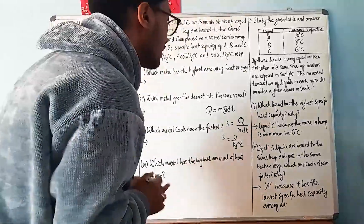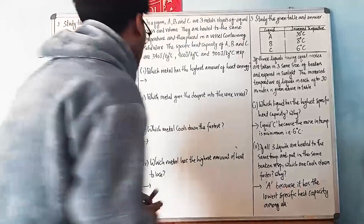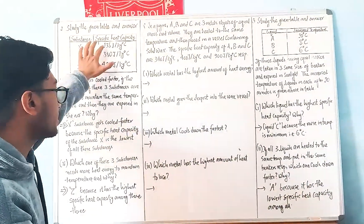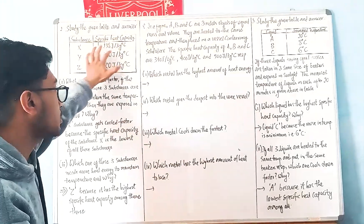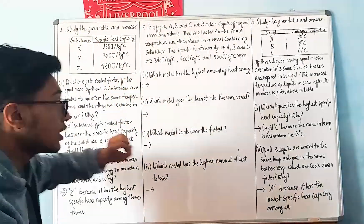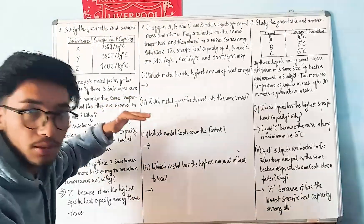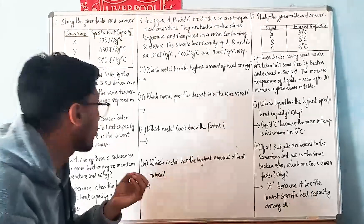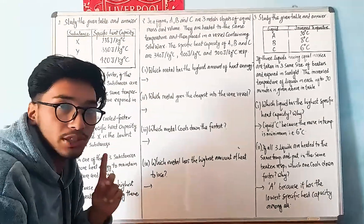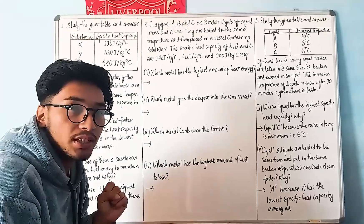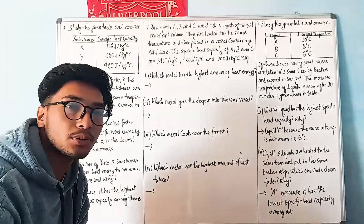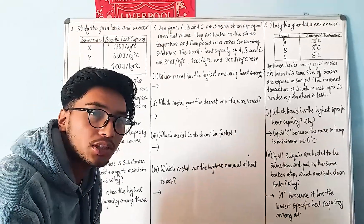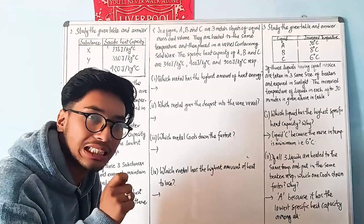Here we can understand the question for substances X, Y, and Z. The specific heat capacities are: X = 138, Y = 380, Z = 420. This is how we solve the specific heat capacity. We can also see water, which has a very high specific heat capacity of 4200 J per kg per degree Celsius.